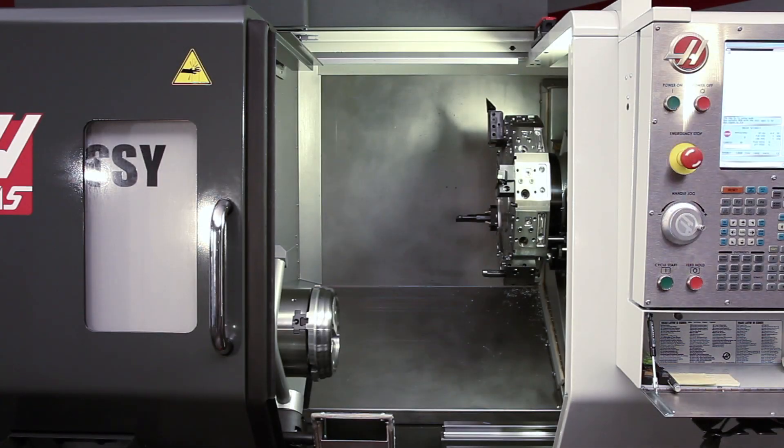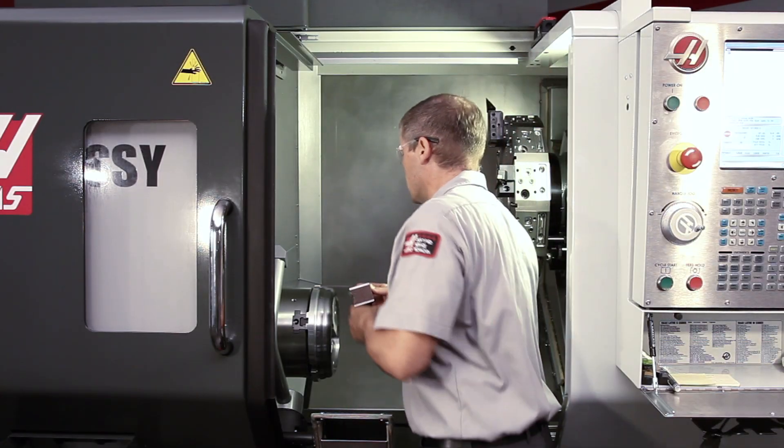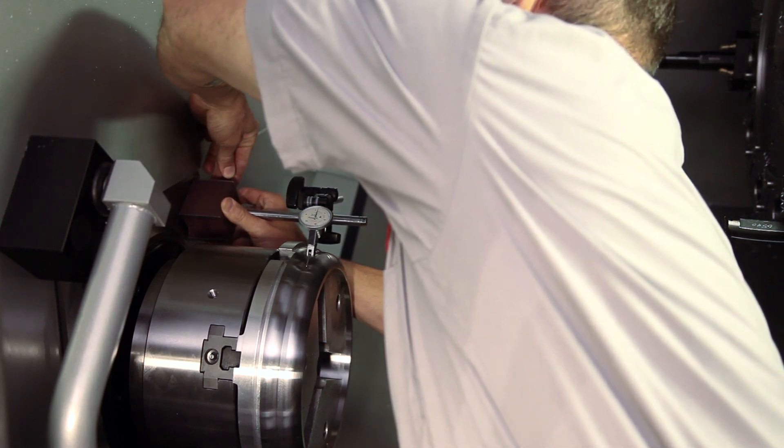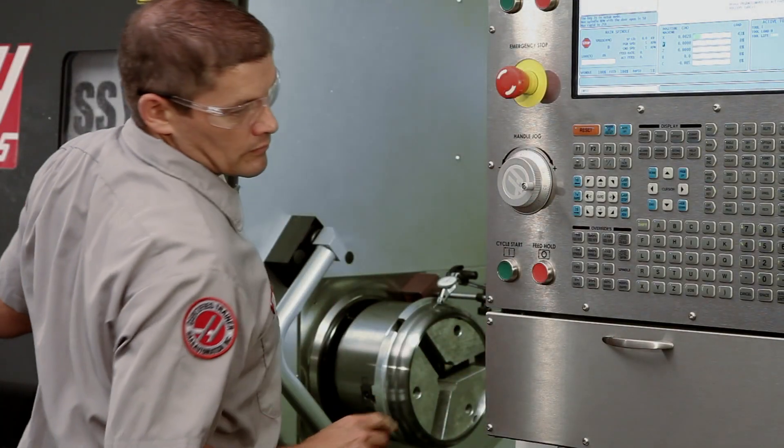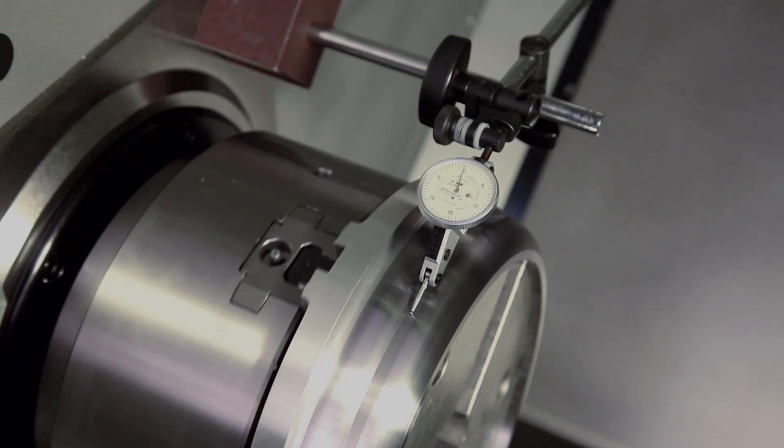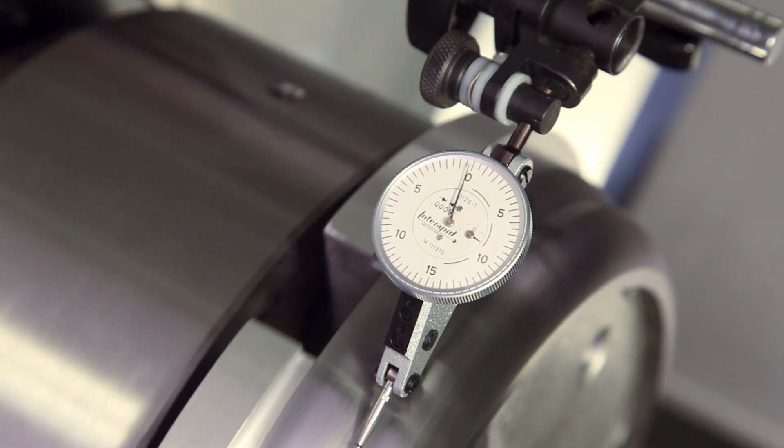To demonstrate how uniformly the pie jaws grip the part, Andrew mounts an indicator to check how much run-out we have, with our part gripped in these jaws. At 250 psi clamp pressure, our part's total indicated run-out using the pie jaws is 5 ten-thousandths.